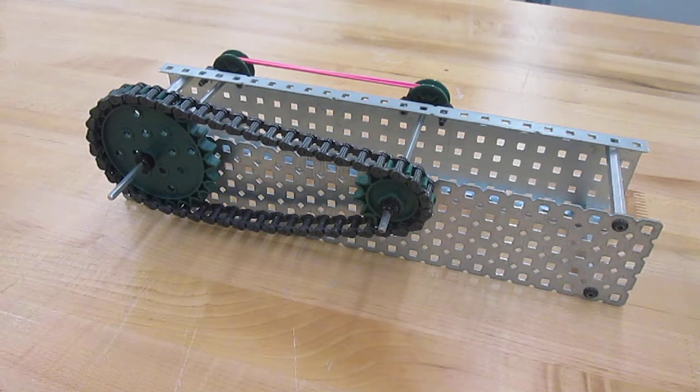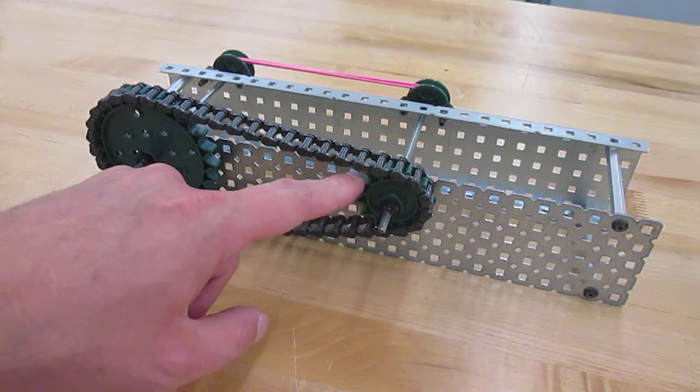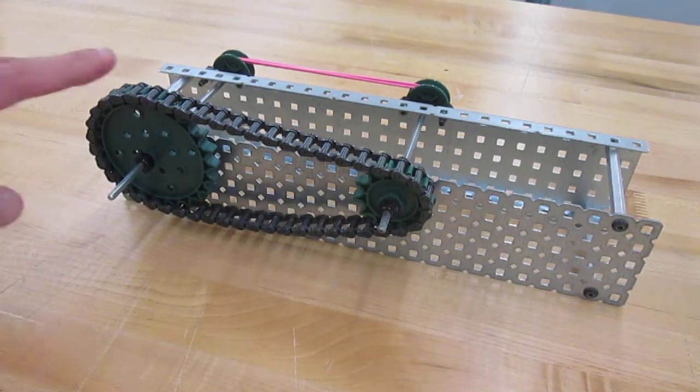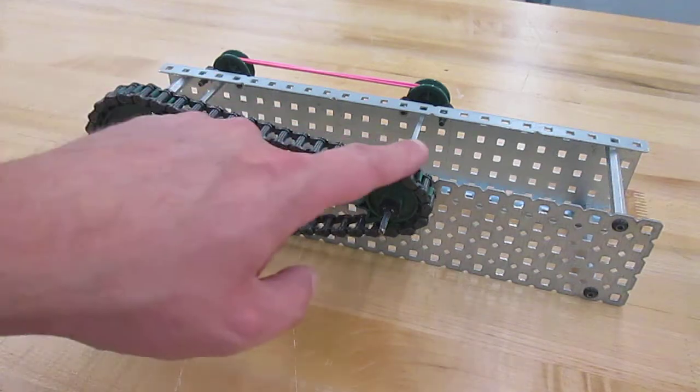The chain drive has two different size sprocket gears. These gears here have bigger teeth. We have our chain that wraps around those two sprocket gears.